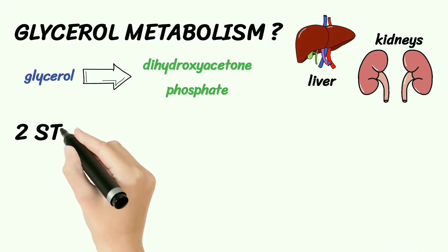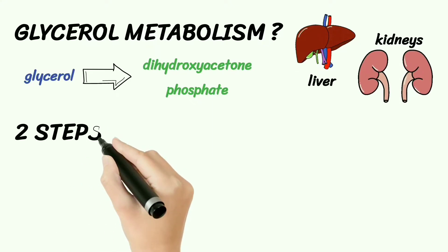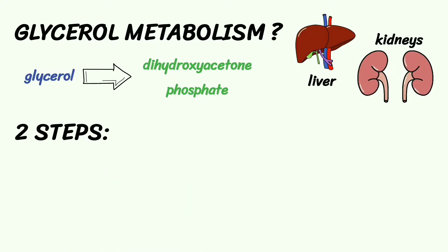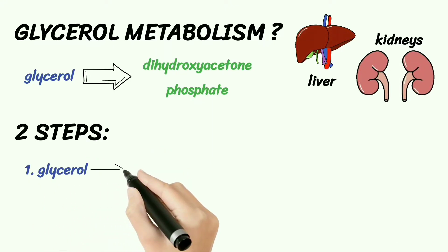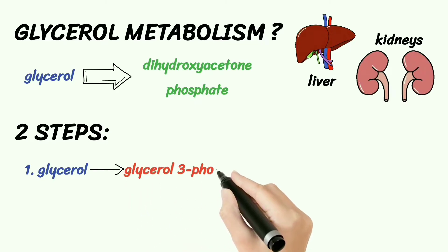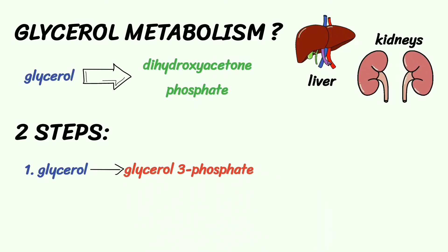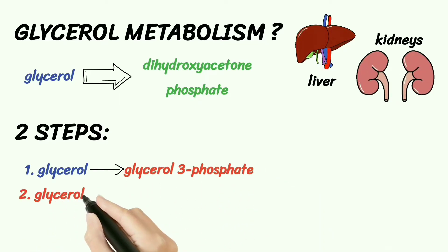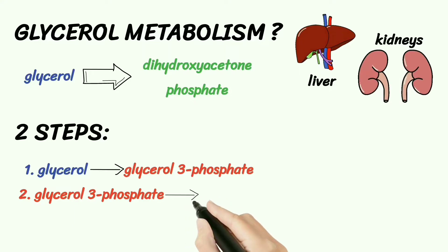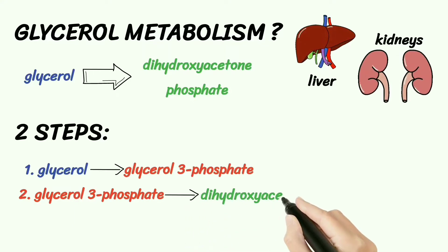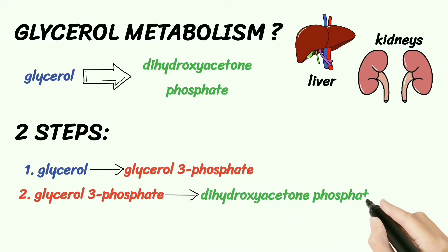There are two steps involved in glycerol metabolism. Step 1 involves the conversion of glycerol to glycerol-3-phosphate. Step 2 involves the conversion of glycerol-3-phosphate to dihydroxyacetone phosphate.